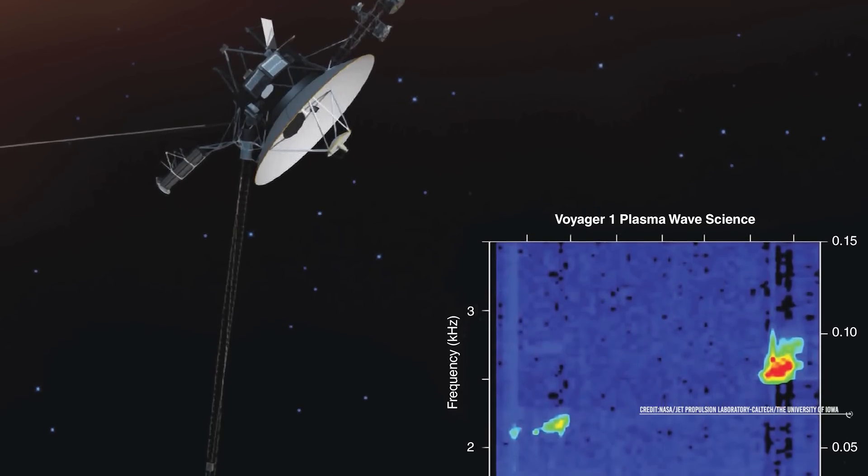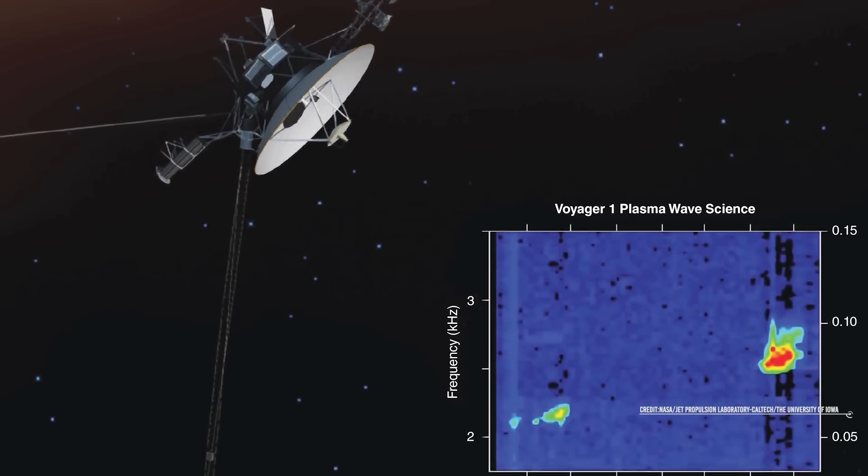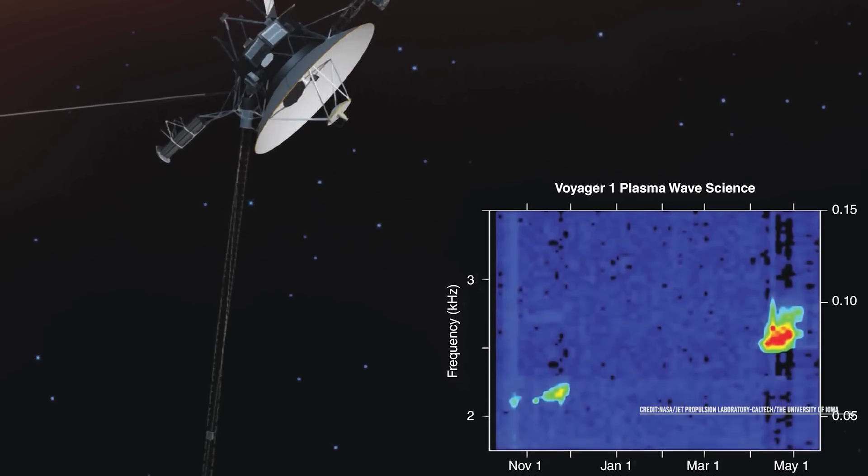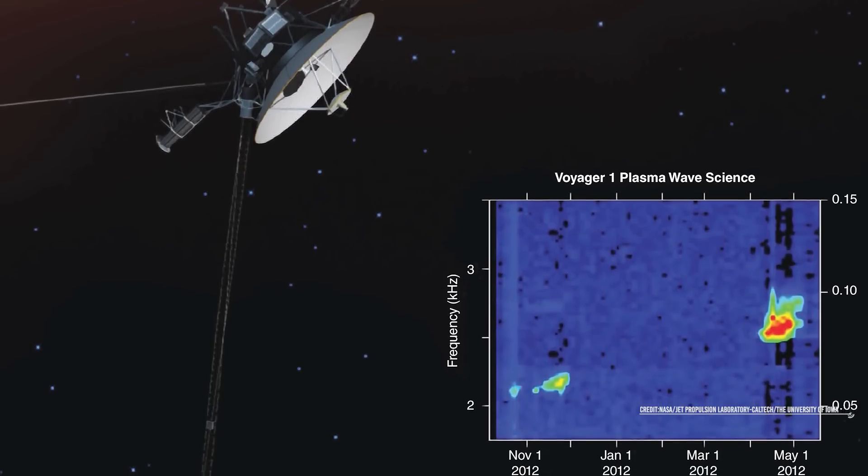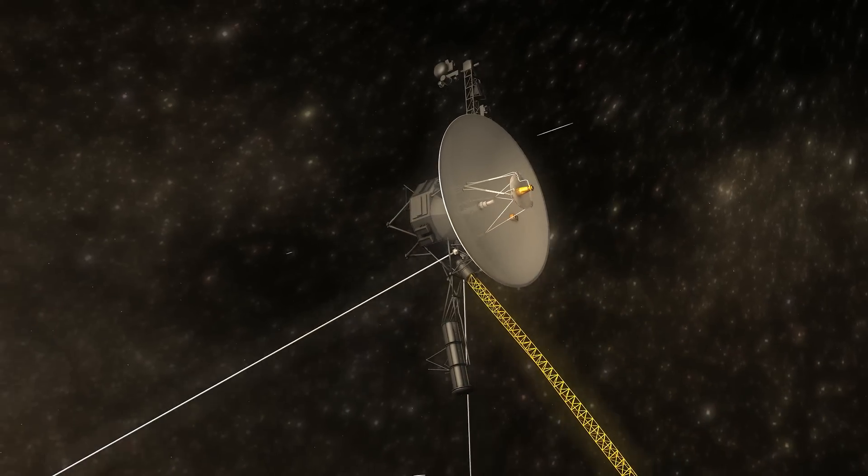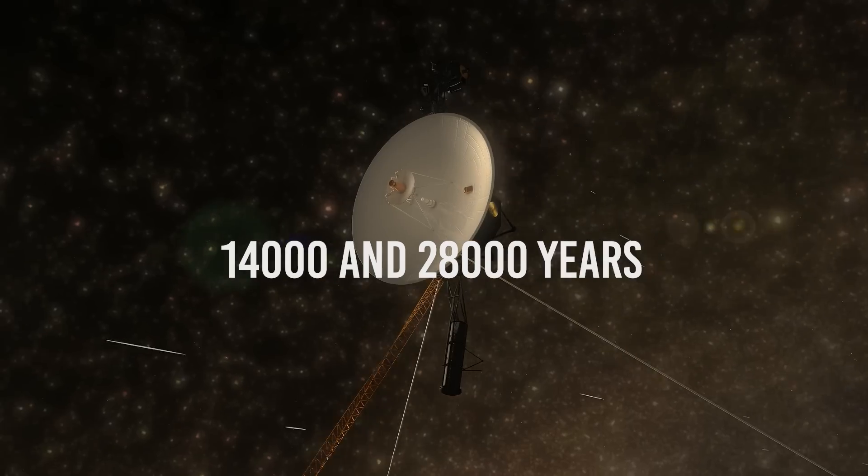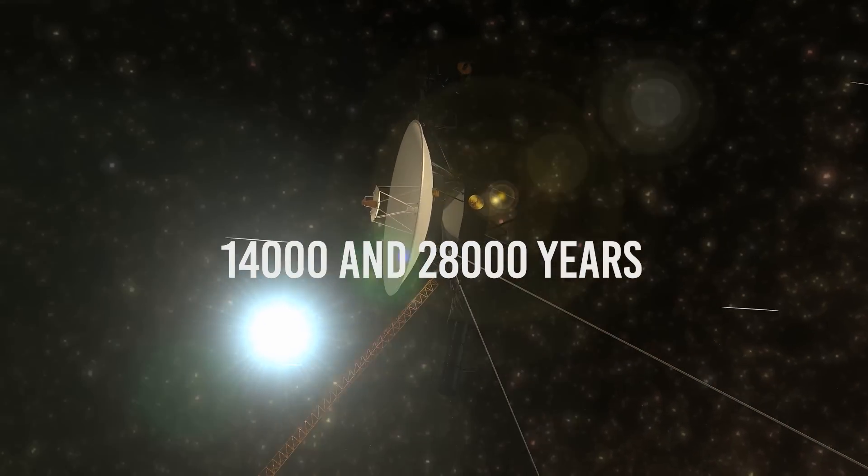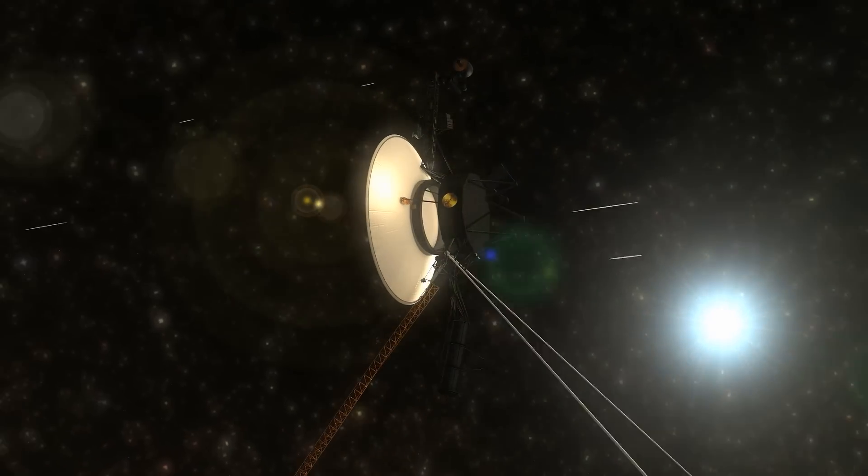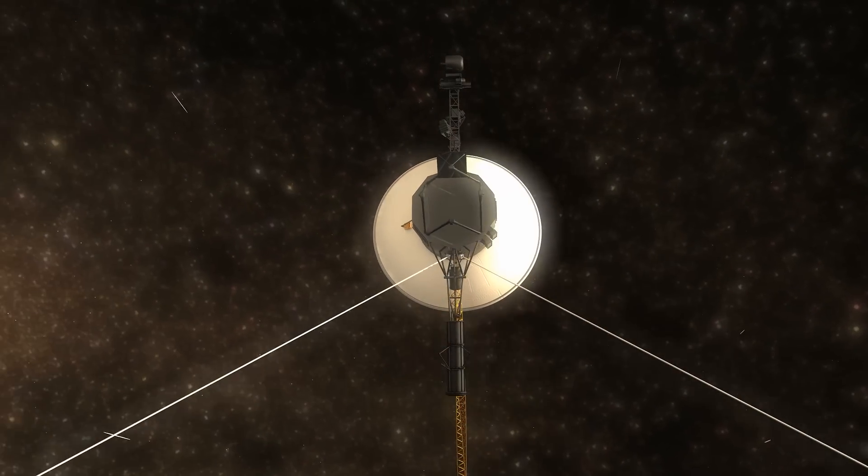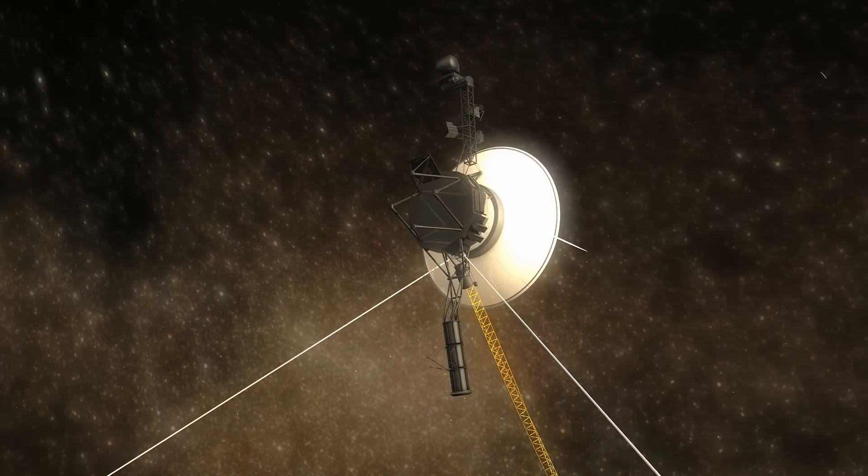However, both Voyager 1 and 2 are still under the effects of the gravitational attraction from the Sun. The Oort cloud measures approximately 50,000 astronomical units, and at the speed that both spacecraft are moving, it will take them between 14,000 and 28,000 years to traverse the entire region. That is to say, until then, we will be able to assure with total certainty that the Voyager spacecraft will have left the solar system entirely within 14,000 years.